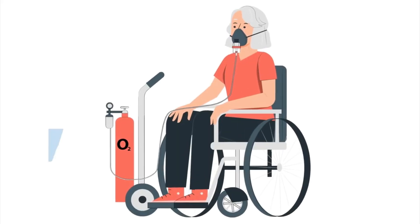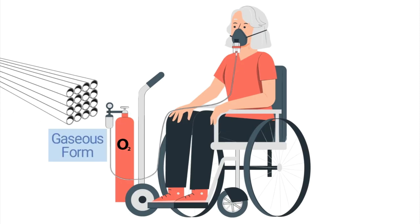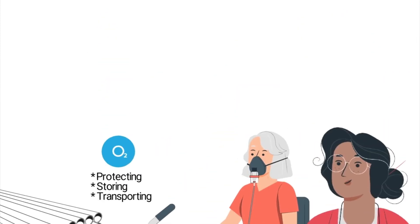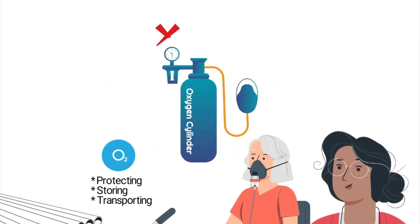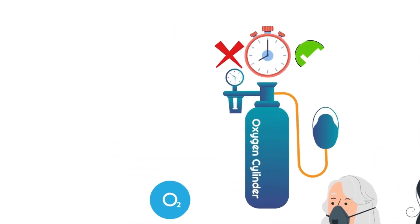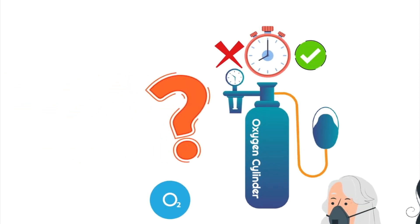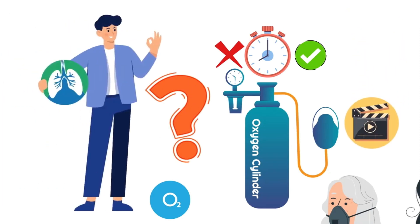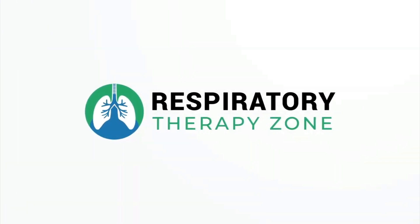An oxygen tank is a pressurized metal container that holds oxygen in a gaseous form. They are made of seamless steel and are helpful in protecting, storing, and transporting oxygen for therapeutic use. However, oxygen tanks are not equipped with a built-in clock that tells the user how much longer the flow of oxygen will last. Therefore, the duration of flow must be calculated in order to know how long the tank will continue to put out oxygen, and that is the topic of this video.